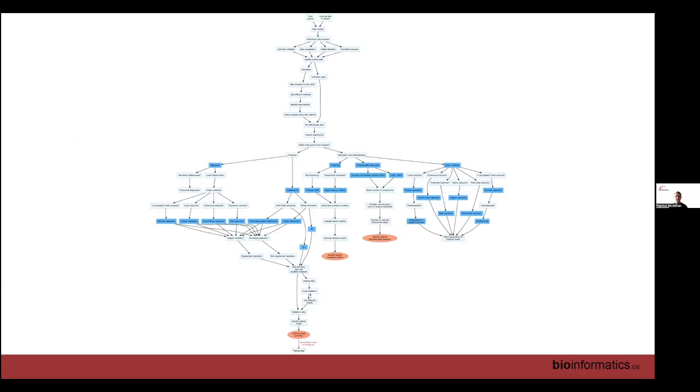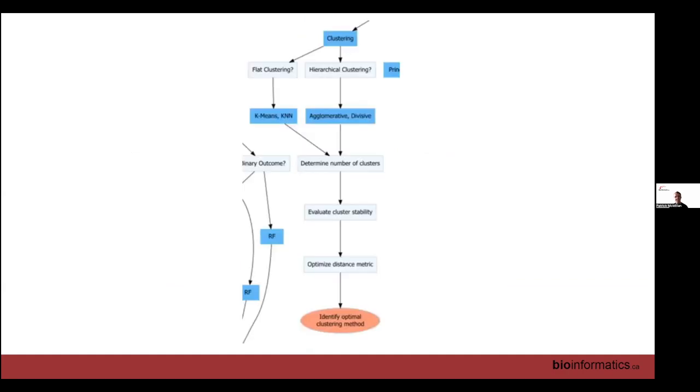Going back to the overall decision tree, we're now in the clustering section. There's a few different kinds of clustering - flat clustering, hierarchical clustering - these have different methods. Basically for all clustering methods you do need to determine what is an optimal number of clusters. From here you can evaluate their stability, optimize distance metrics. These statistical analyses can help you identify an optimal number of clusters or the optimal clustering method, but again it needs to be more of a holistic approach than other things within statistics.